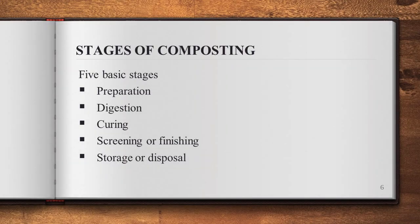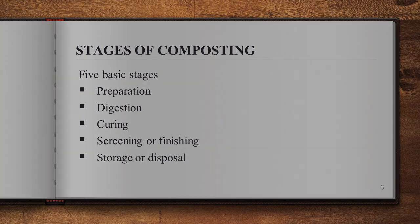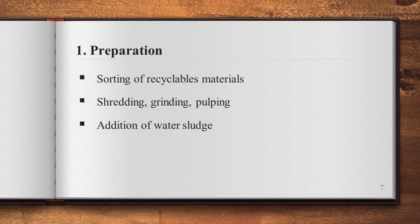Next, stages of composting. There are five stages of composting: Preparation, Digestion, Curing, Screening or Finishing, and Storage or Disposal. The first stage, Preparation, includes sorting of recyclable materials, shredding, grinding, pulping, and addition of water and sludge.